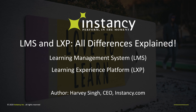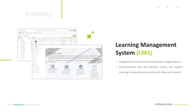LMS and LXP: All Differences Explained. A Learning Management System (LMS) is a software platform specially designed for training and development organizations. An LMS is an administrative tool that focuses on delivering, tracking, and reporting all educational content and physical or virtual classroom events. The LMS is a more administrative-centric view.